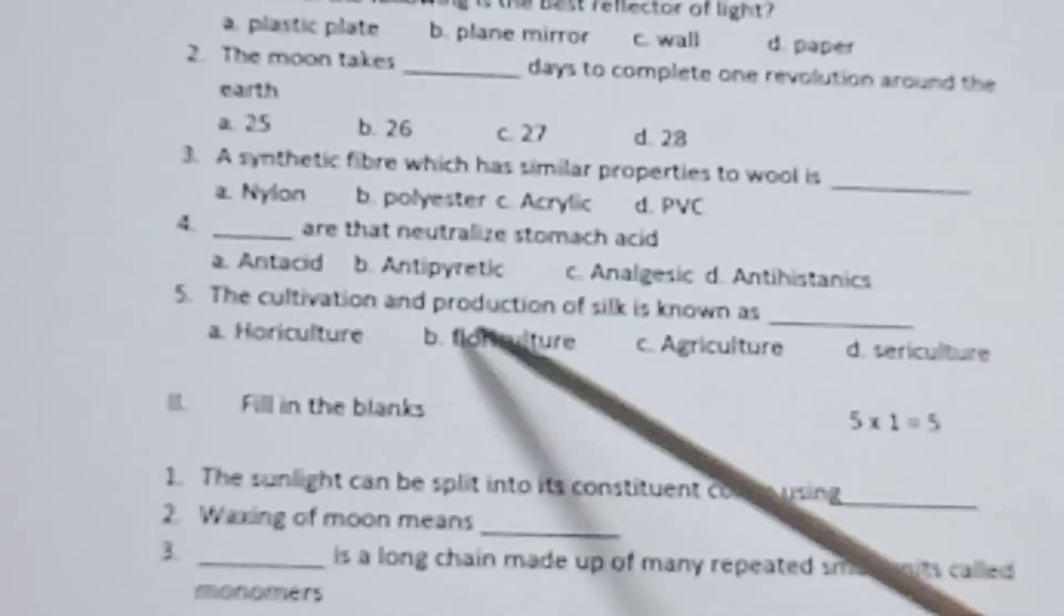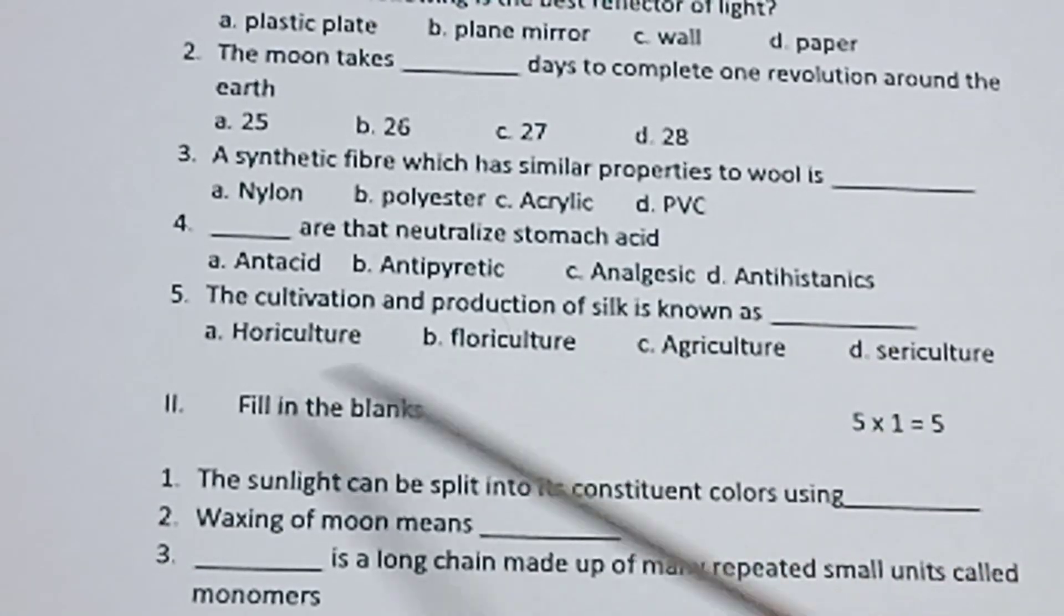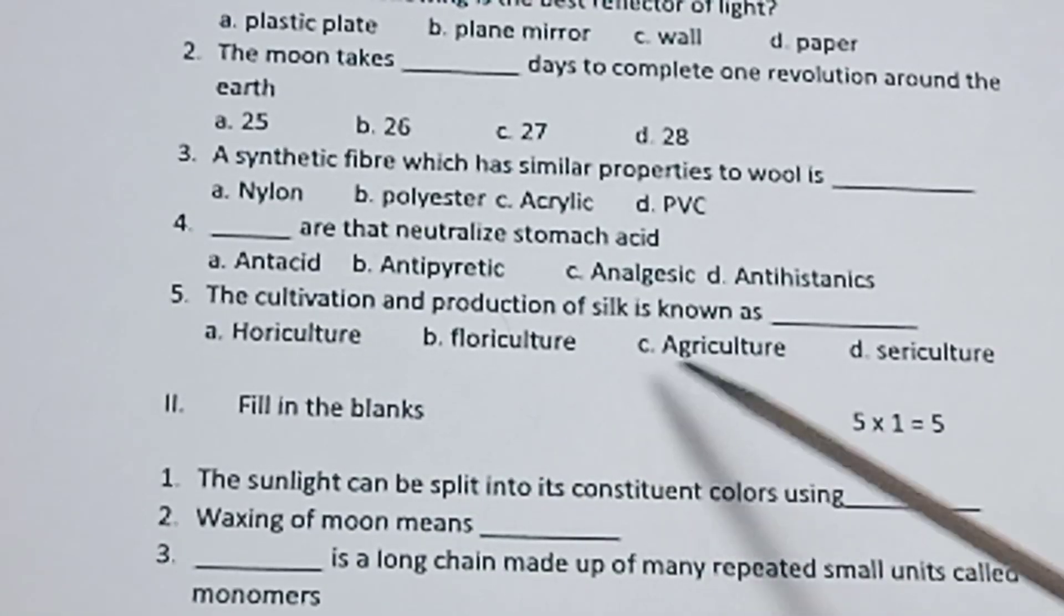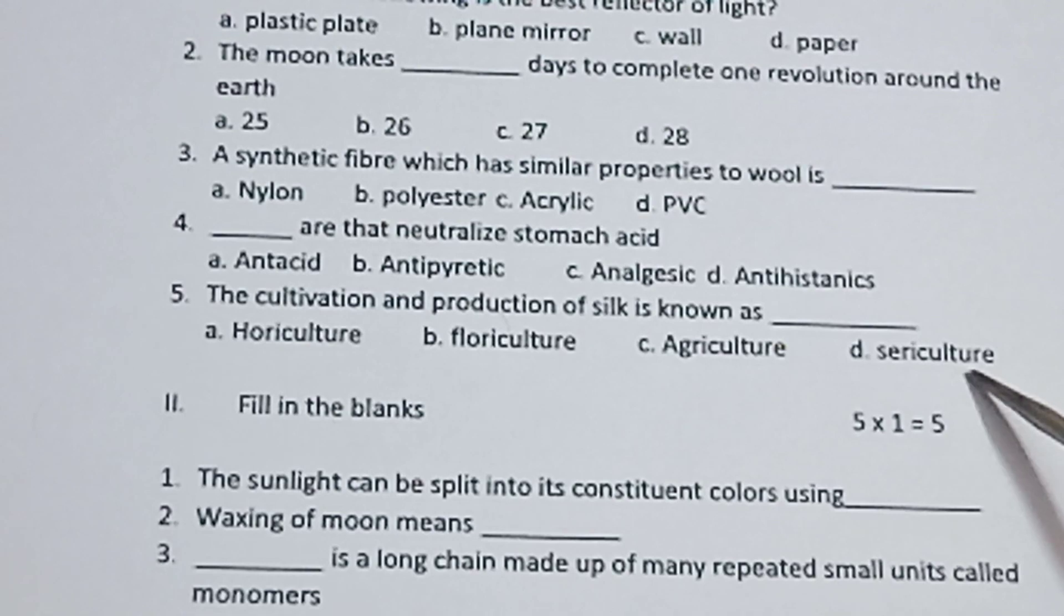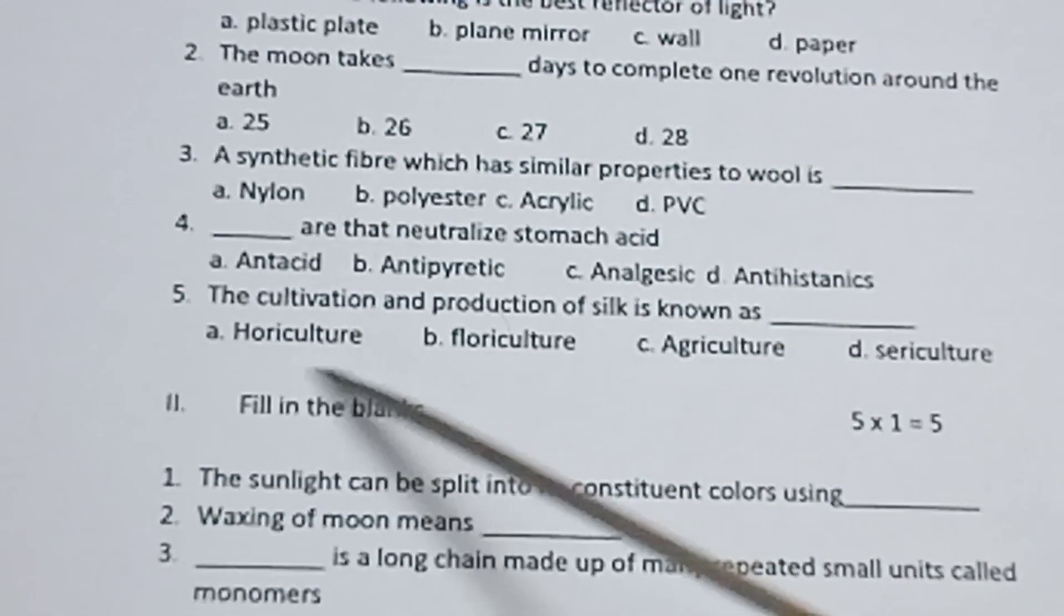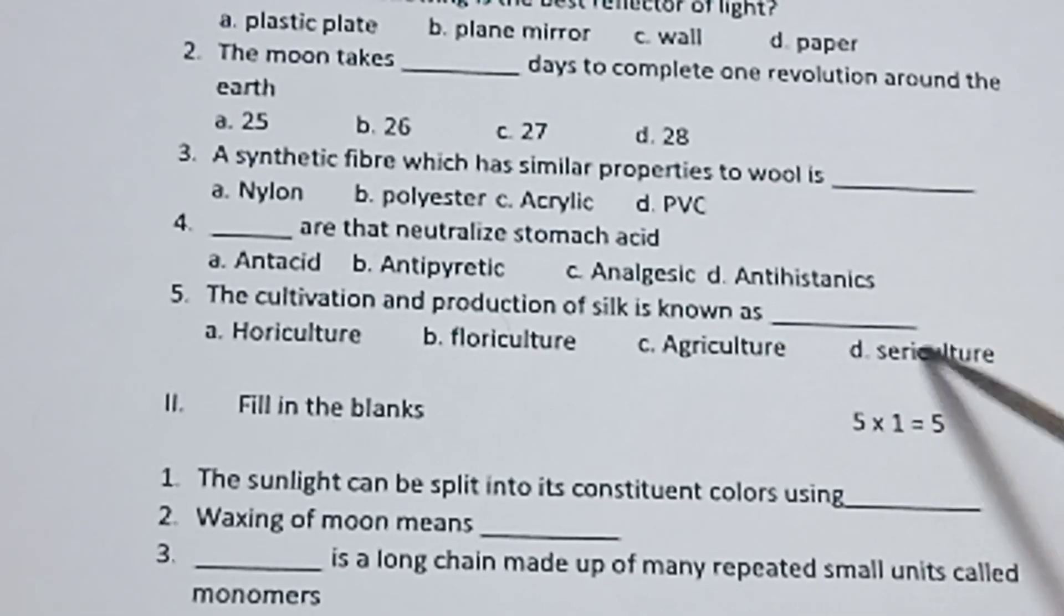Fifth one, the cultivation and production of silk is known as: horticulture, floriculture, agriculture, sericulture. In the options, which is correct, that is what you want to add.